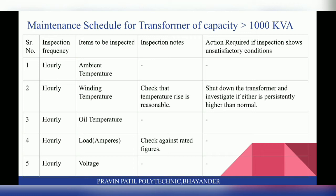Next is the Maintenance Schedule for transformers of capacity greater than 1000 KVA. On an hourly basis, check ambient temperature and winding temperature. Ensure the temperature rise is reasonable. Shut down the transformer and investigate if either is persistently higher than normal. Also check oil temperature and load in amperes — check against rated figures. Additionally check voltage against rated figures.